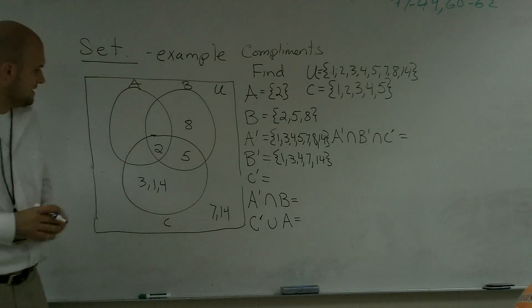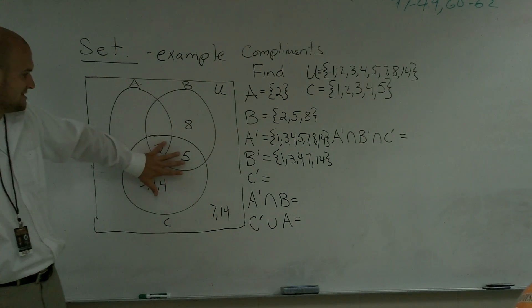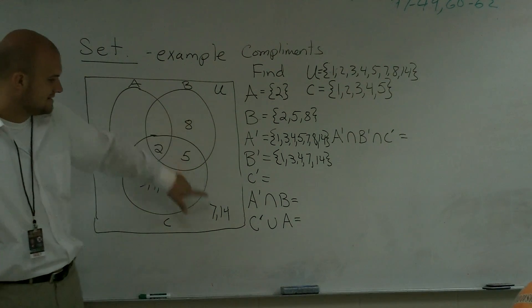And then C prime is everything that's not in C but that's still in our universal set. That's 8, 7, and 14.